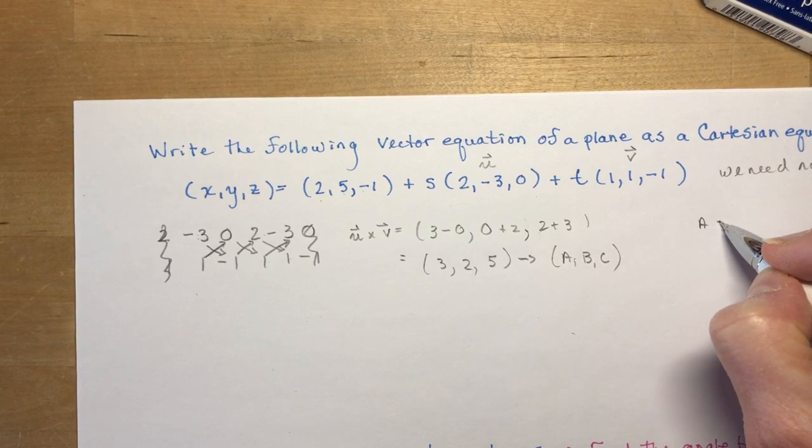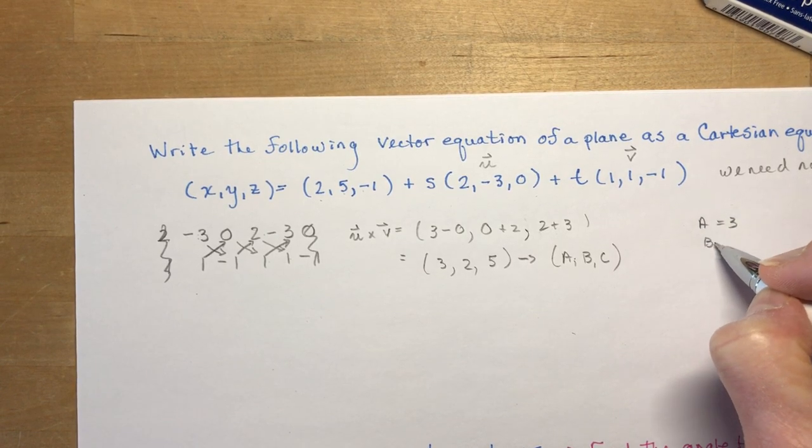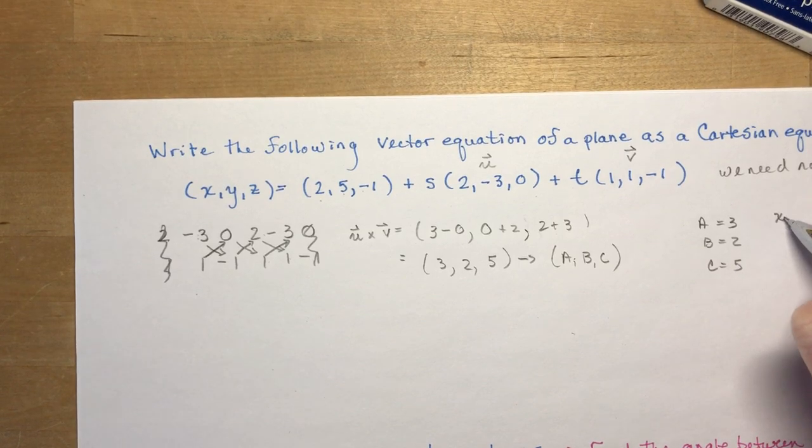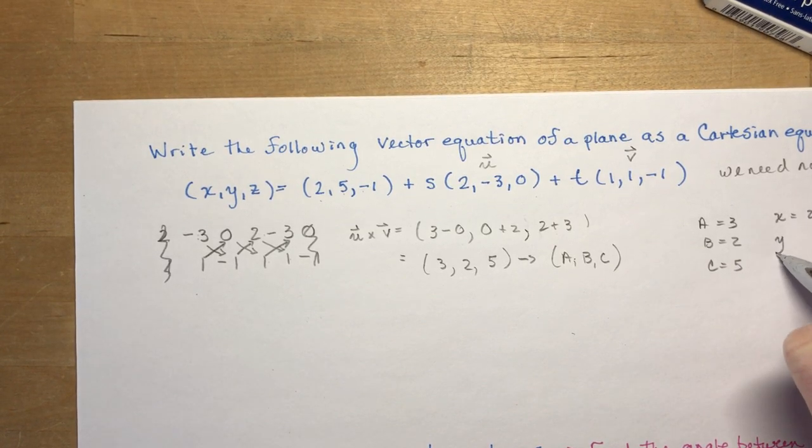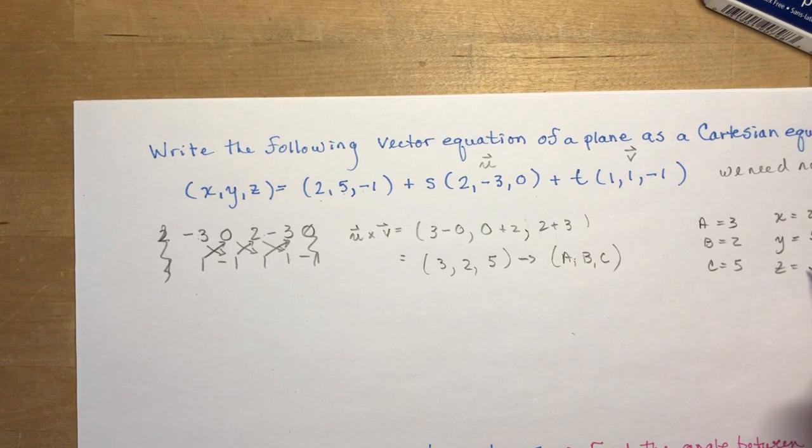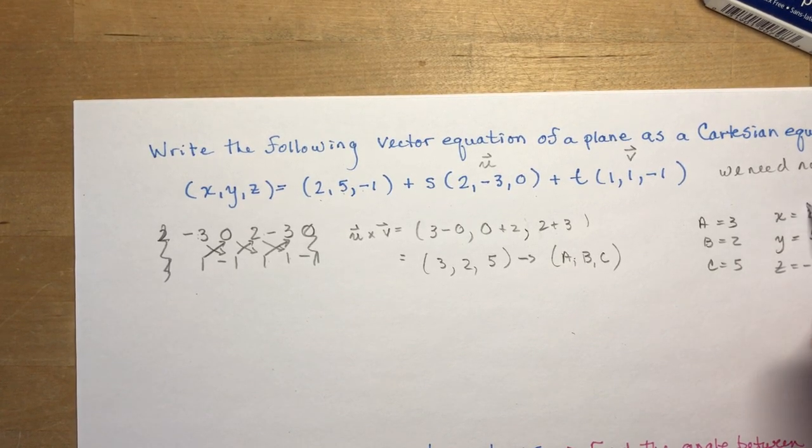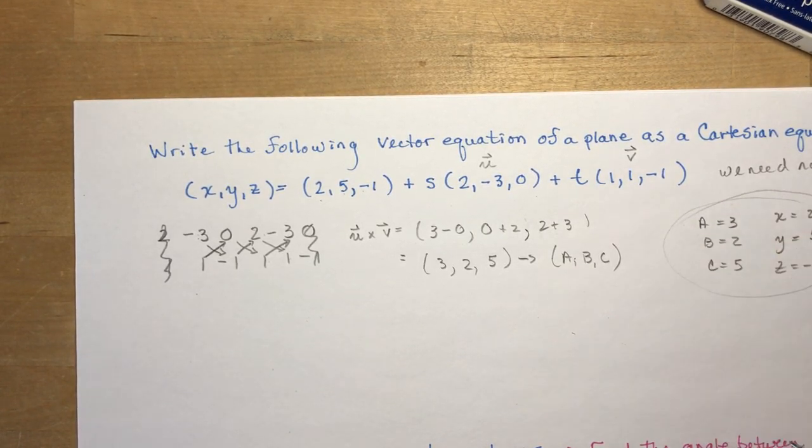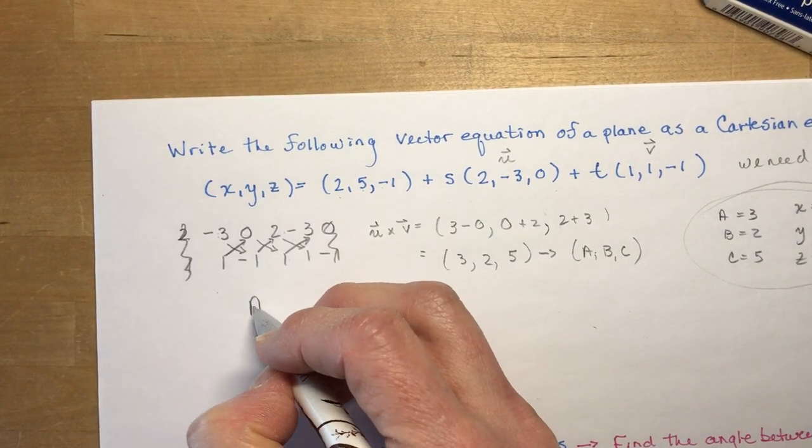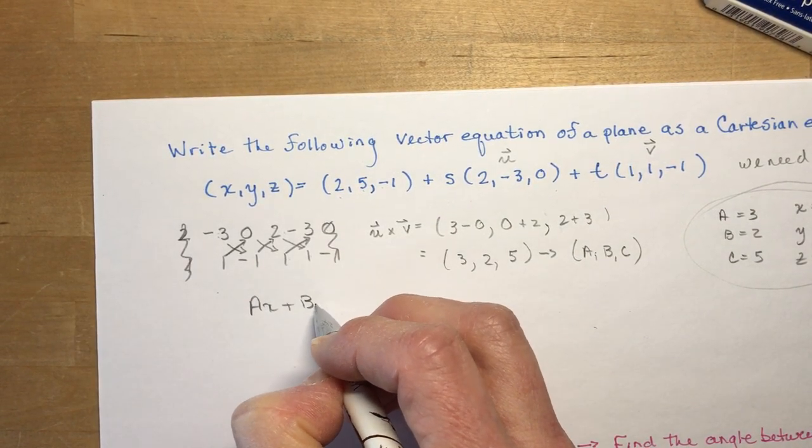So we're going to say A is equal to 3. B is equal to 2. C is equal to 5. X is equal to 2. Y is equal to 5. And Z is equal to minus 1. And sometimes it's a good idea to write these things out. It helps you kind of figure out where you're going.